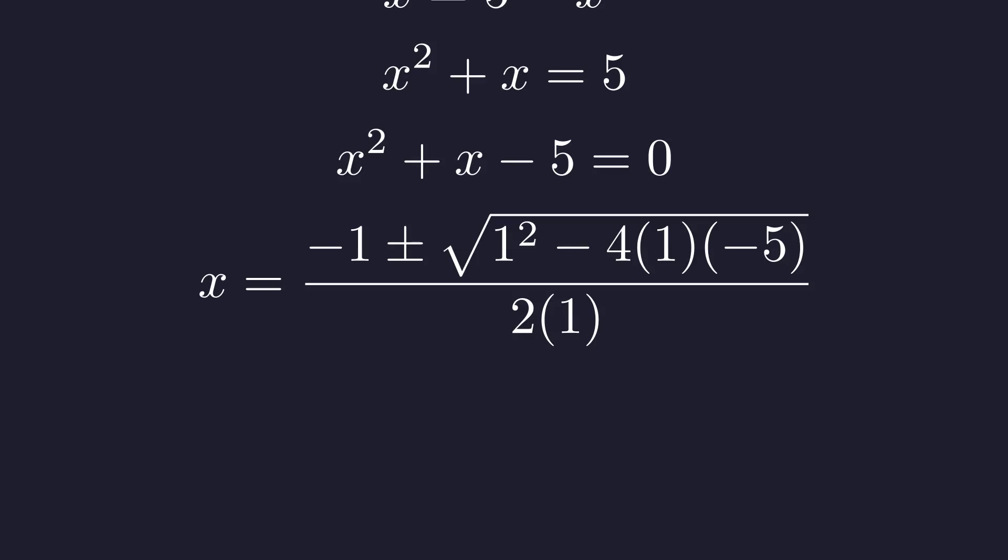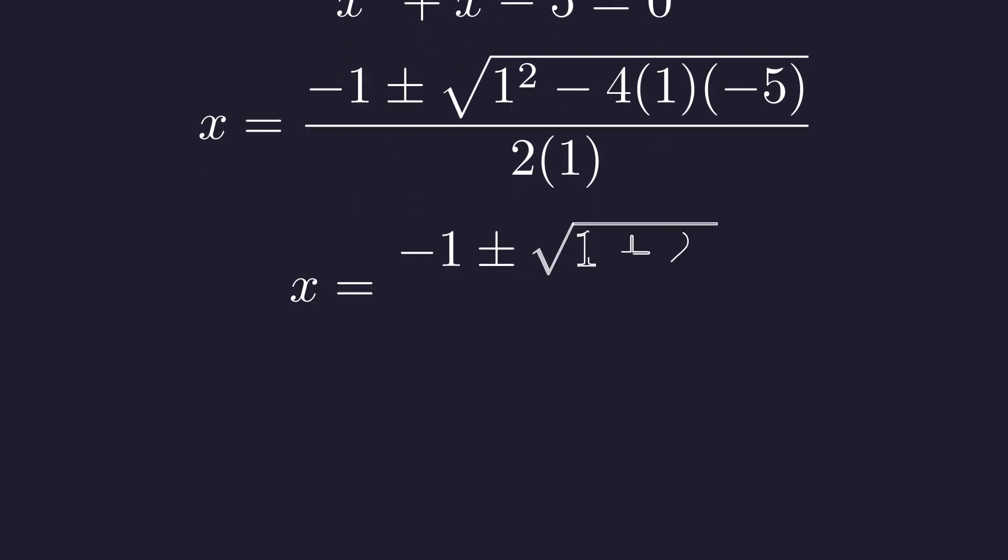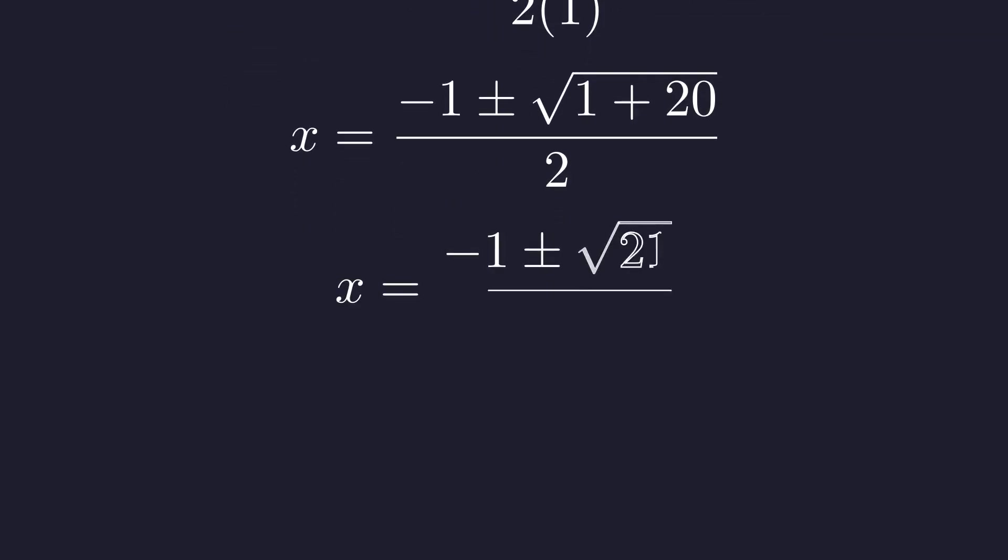Plugging in a equals 1, b equals 1, and c equals negative 5. First, we simplify the terms inside the square root, which gives us our two potential solutions from case one.